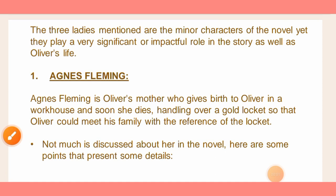Out of all three minor female characters of the novel, we are going to discuss Agnes Fleming first, because Agnes Fleming is the mother of the main character of the novel, that is Oliver Twist. We can see that Oliver is in a workhouse, and soon after Agnes Fleming's death, he finally has a gold locket handed over, which connects him to his original family in London. It has a picture which can refer Oliver to his original family.